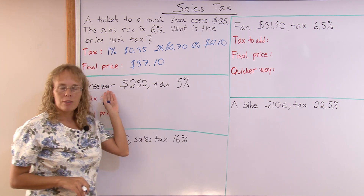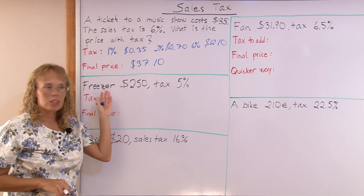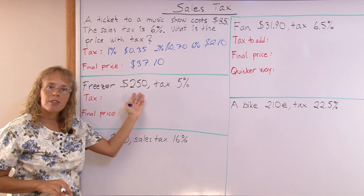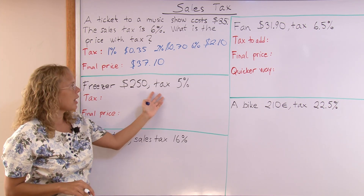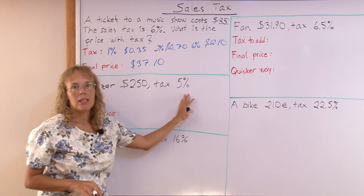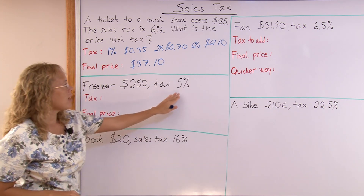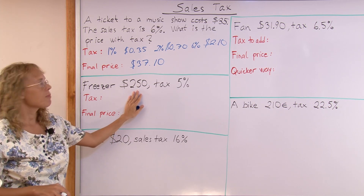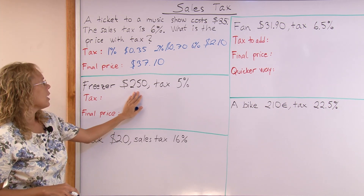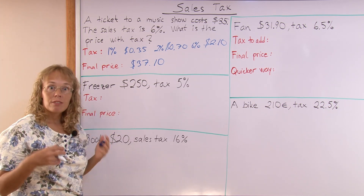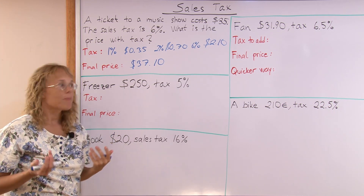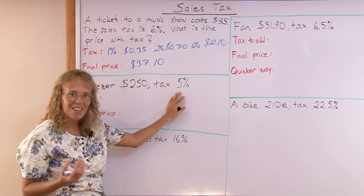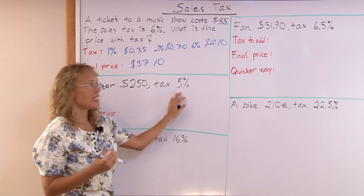In this example, a freezer costs, without tax, $250 and the tax is 5%. The tax is 5% of this number.